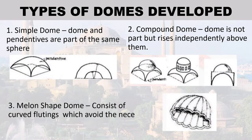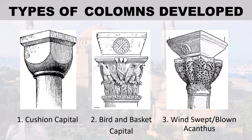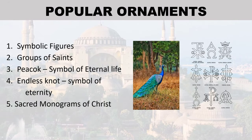Types of domes developed: simple dome — where the dome and pendentives are part of the same sphere; compound dome — where the dome is not part of the same sphere but rises independently above them; melon-shaped dome — consisting of curved flutings which avoid the knees. Types of columns developed: 1. Cushion Capital, 2. Bird and Basket Capital, 3. Wind-swept or Blown Acanthus. Popular ornaments: 1. Symbolic Figures, 2. Group of Saints, 3. Pika — Symbol of Eternal Life, 4. Endless Knot — Symbol of Eternity, 5. Sacred Monograms of Christ.